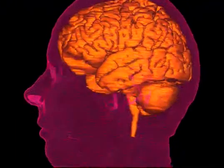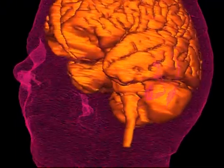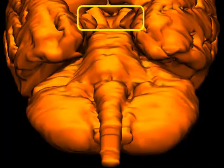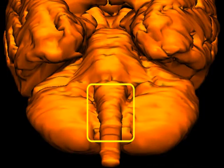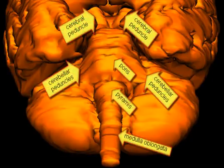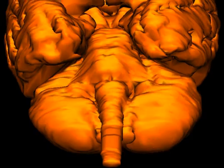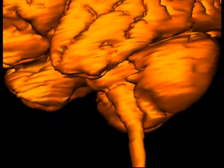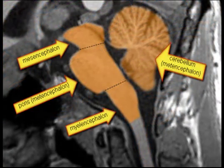The brainstem consists of the three inferior brain vesicles: the mesencephalon, the metencephalon, and the myelencephalon, each with its own typical landmarks. The cerebellum belongs to the metencephalon. In the sagittal MRI, the three components of the brainstem plus the cerebellum are clearly visible.